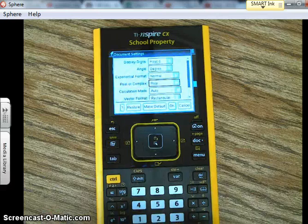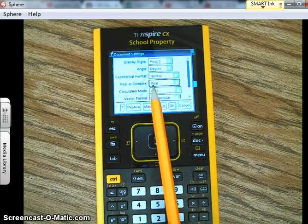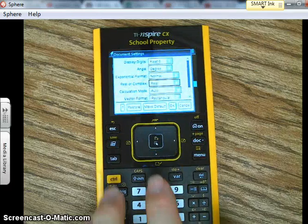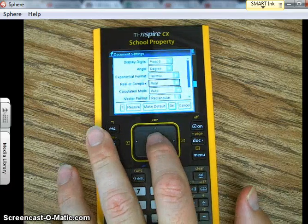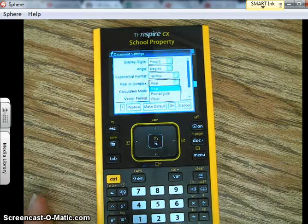Mine said rectangular and I changed it to real, so if I enter you can see rectangular there, but you want to change it to real.